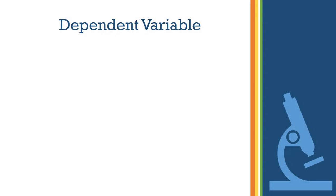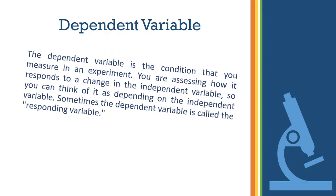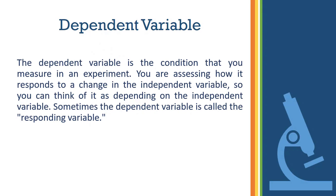The next one is the dependent variable. The dependent variable is the condition that you measure in an experiment. You are assessing how it responds to a change in the independent variable, so you can think of it as depending on the independent variable. Sometimes the dependent variable is called the responding variable.